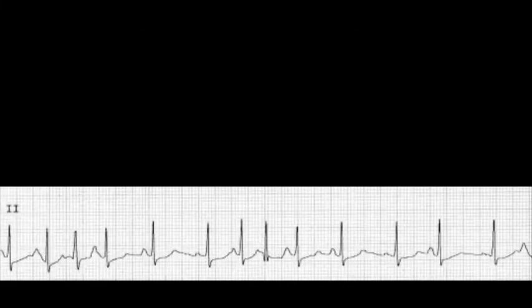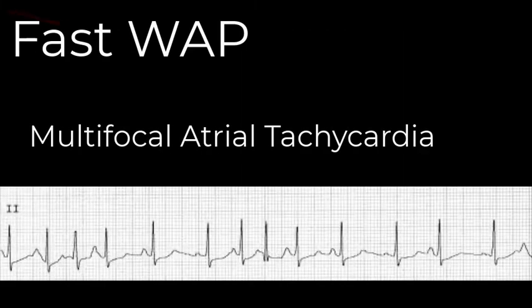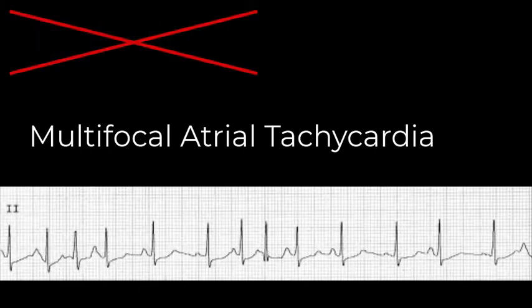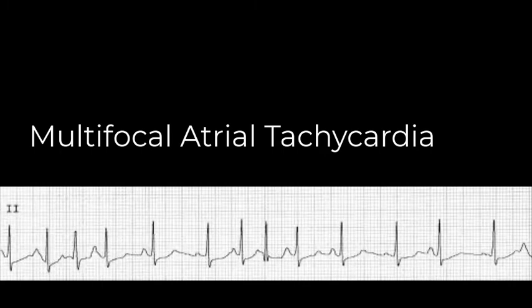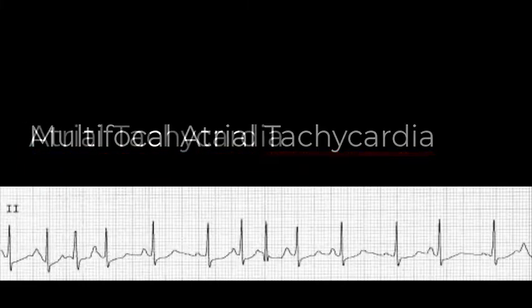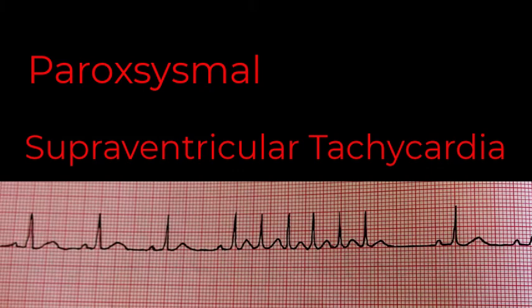If a patient has a wandering atrial pacemaker and the rate is greater than 100, rather than calling it a fast WAP, it gets an entirely new label: multifocal atrial tachycardia. It's coming from lots of places, those places are all in the atria, and it's fast. Whether it comes from one site or many, if the atrial tachycardia comes and goes intermittently, we call it a paroxysmal atrial tachycardia. That paroxysmal term is especially common for paroxysmal supraventricular tachycardia, which we'll discuss in another session.